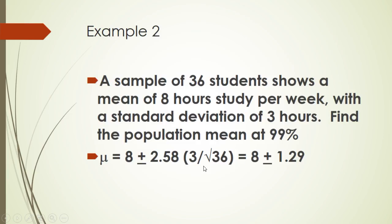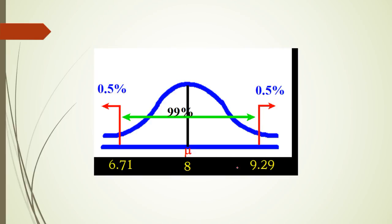So if we do the math here, this ends up being 8 plus or minus 1.29. It's bigger - 1.29 is bigger than 0.98. Why is it bigger? Because this is 99% accurate versus 95% accurate. To be 99% accurate, we got to get a bigger number, and that bigger number here is 1.29. So we take 8 plus 1.29 and 8 minus 1.29.